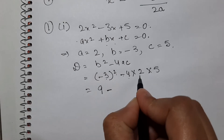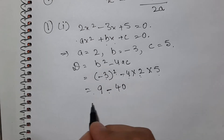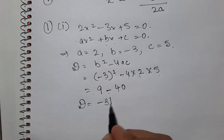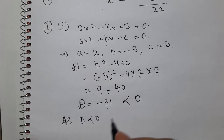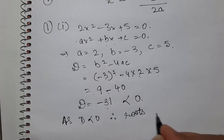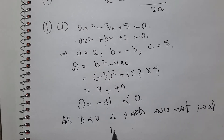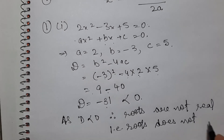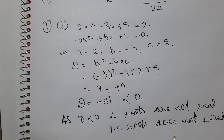This gives us 9 minus 4 times 2 is 8, and 8 times 5 is 40. So D equals 9 minus 40 equals minus 31. Since D is minus 31, it is less than 0. Therefore, as D is less than 0, roots do not exist — they are not real. So we are not finding roots here.